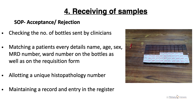At the pathology lab, there are standard operating procedures (SOPs) with acceptance and rejection criteria. We check the number of bottles sent by clinicians, label them as 1, 2 or A, B, C, and match every patient detail — name, age, sex, MRD number, ward number — on both the bottles and the requisition form. We allocate a unique histopathology number to each surgical specimen received, maintain a record, and make an entry in the register.